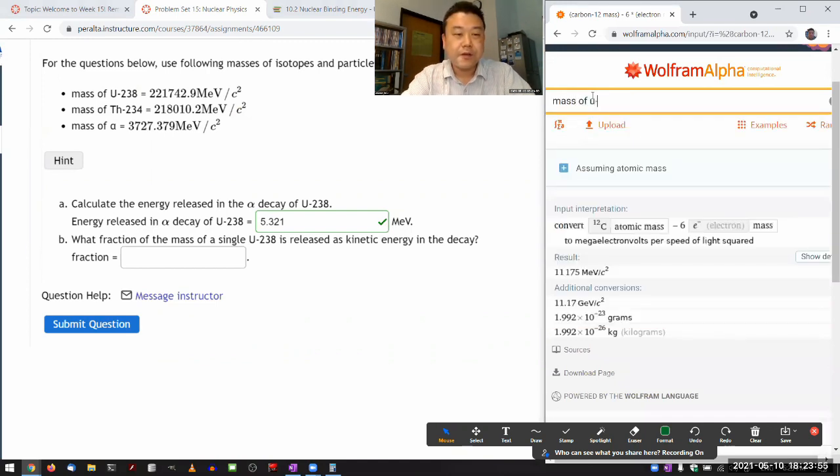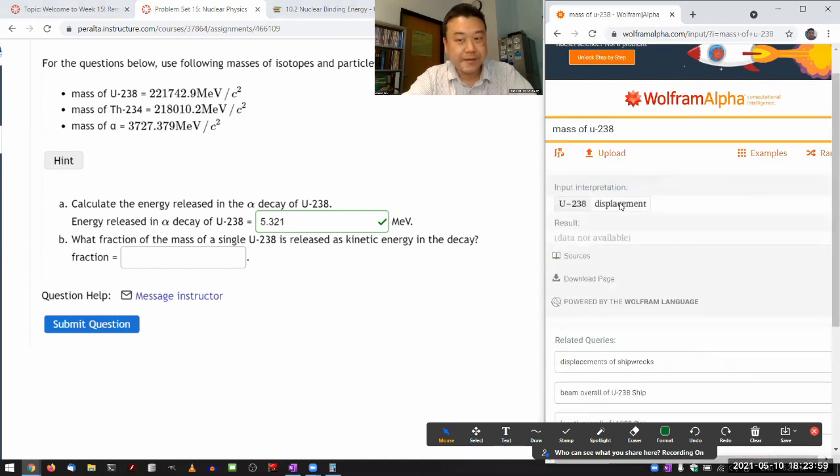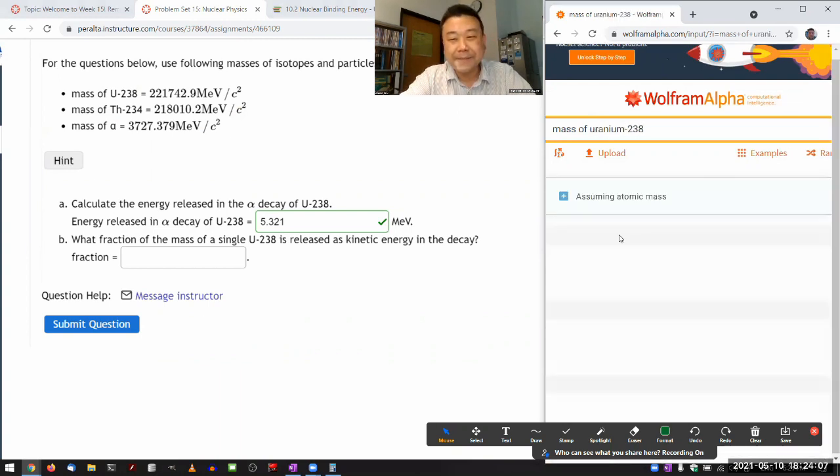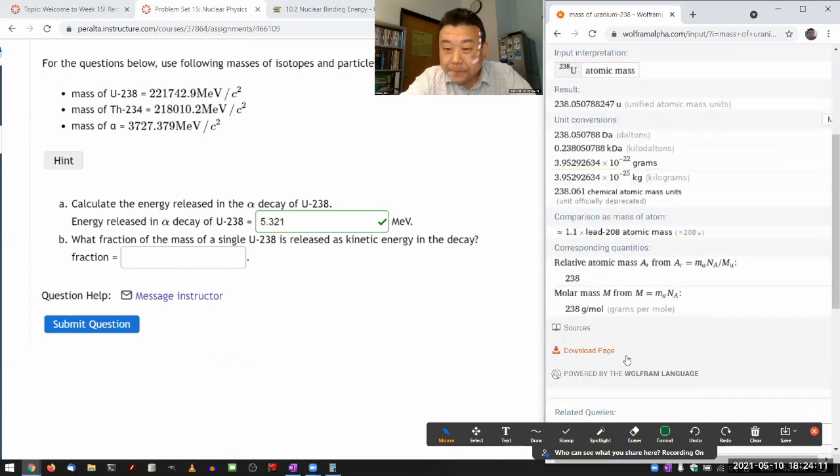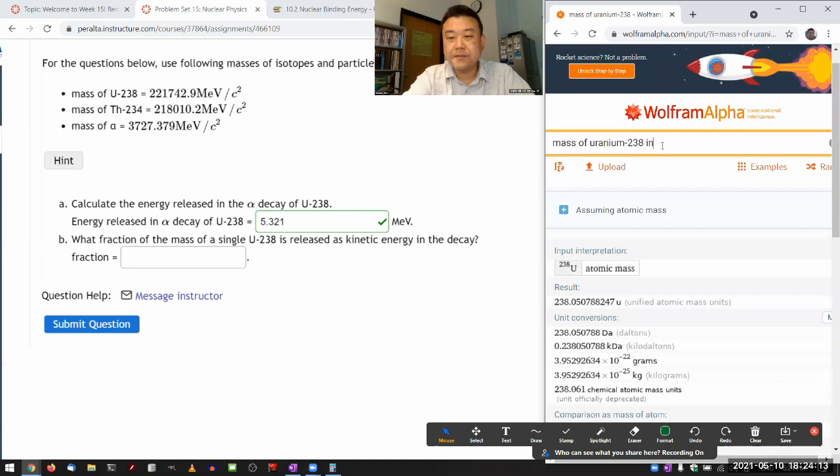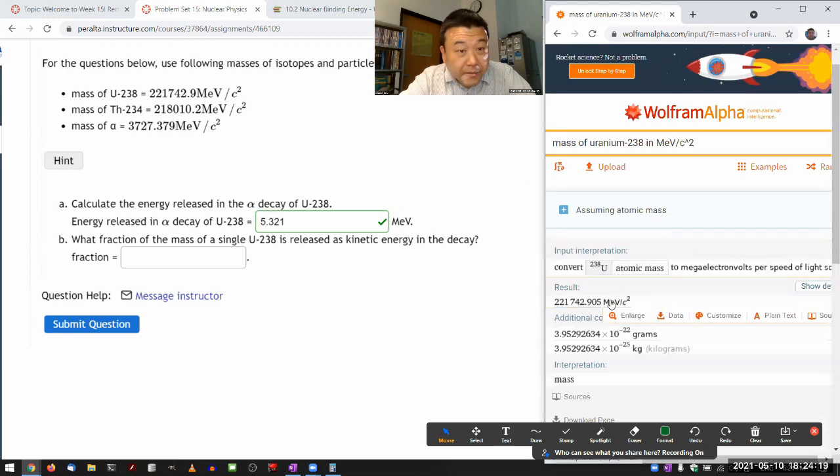So mass of uranium-238. Let's see what that is. Displacement, I don't know, uranium-238. So in mega electron volt per C squared. 42905, okay.